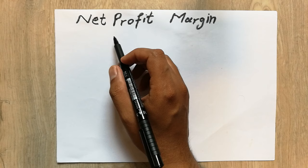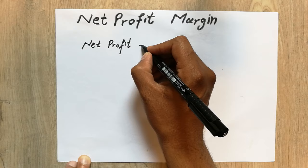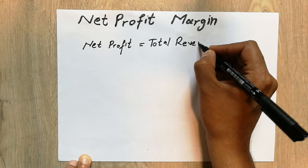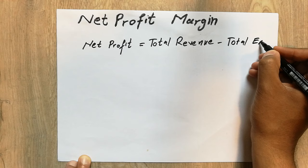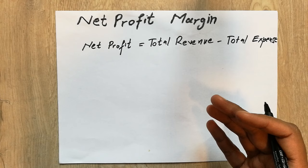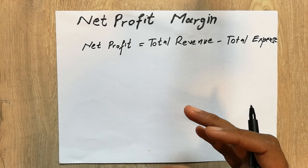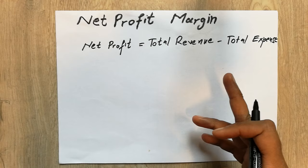The net profit is equal to total revenue minus total expenses. Total revenue is the total income or total sales that you generated. Total expenses include your product cost, lending cost, operational cost, salaries, and all other expenses. This is how we calculate the net profit.